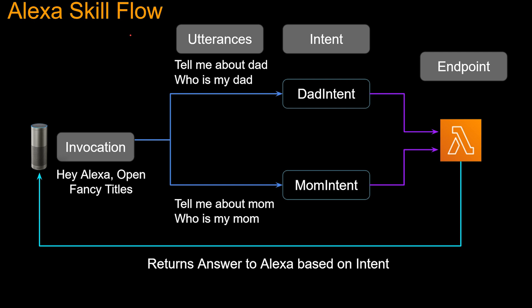Let's understand the flow. The terms in the gray boxes are the key terms, such as invocation, utterances, etc. We are going to see and use these terms in the Alexa skill builder. So when you say 'hey Alexa, open skill name' — or in this case, 'hey Alexa, open Fancy Titles' — it starts interaction with your particular skill, and that is called invocation. So Fancy Titles is the skill invocation name.